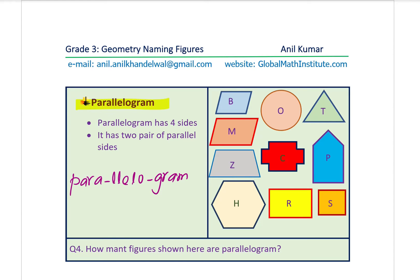A parallelogram has four sides and two pairs of parallel sides. Let's figure out which figure has two pairs of parallel sides — we have one pair of parallel sides and also a second pair of parallel sides. So it is a four-sided figure with two pairs of parallel sides. That figure is your parallelogram. Question number four: how many figures shown here are parallelograms? For a parallelogram, two things are important: four sides and two pairs of parallel sides.